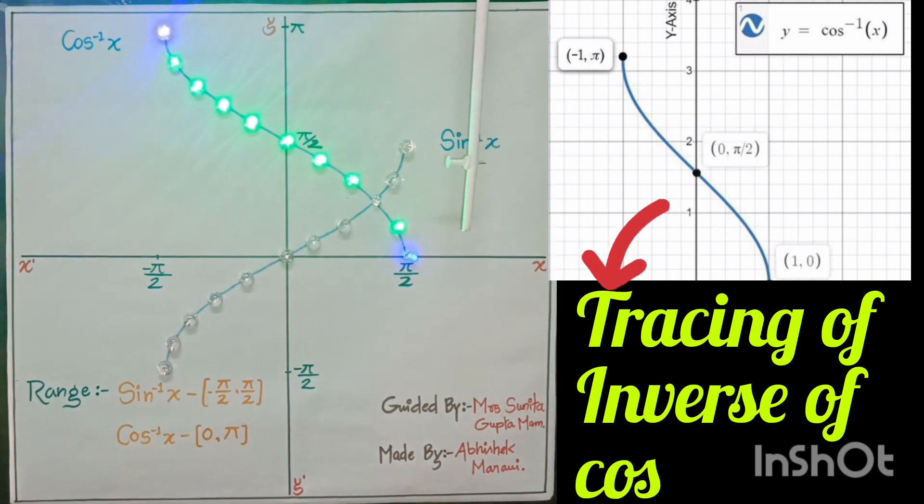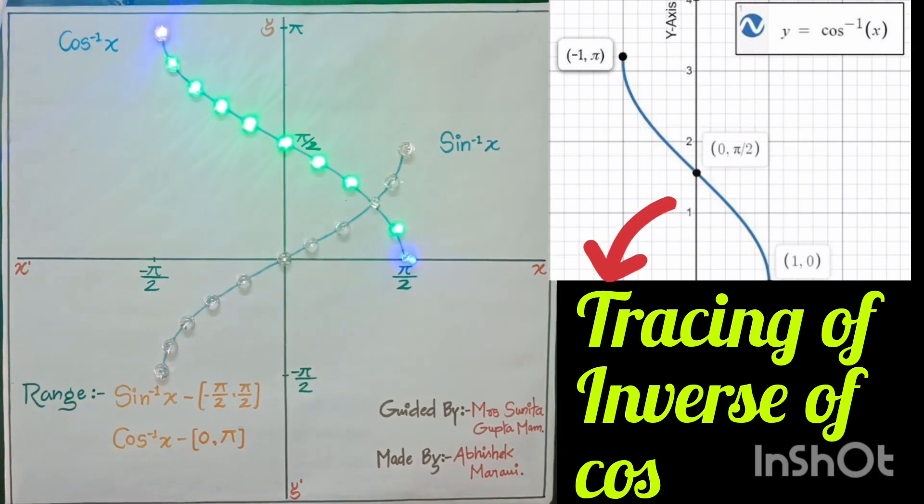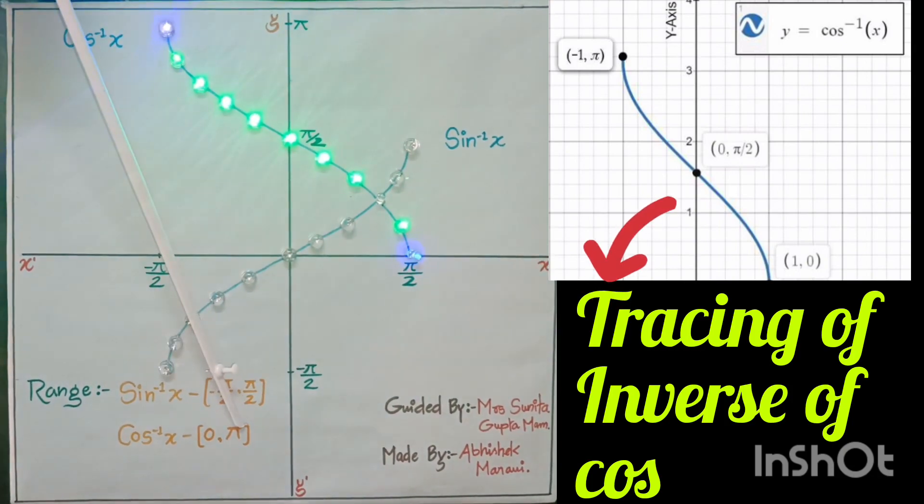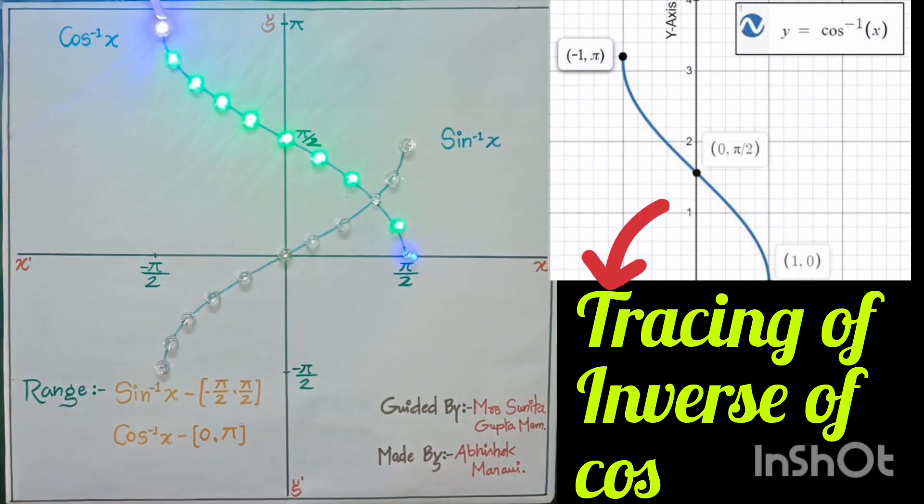Second one is tracing of cos inverse x and its range is closed interval 0 to pi and its domain is same as sin inverse x, closed interval minus 1 to plus 1.